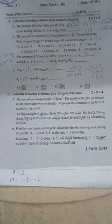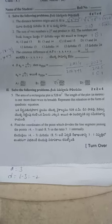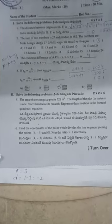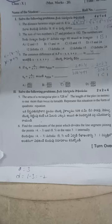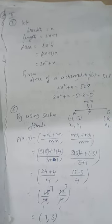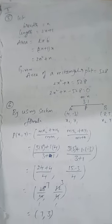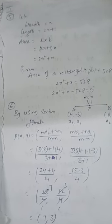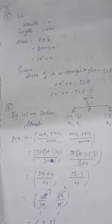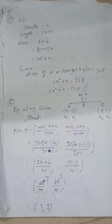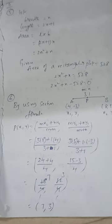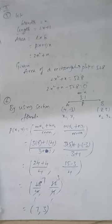The area of a rectangular plate is 528 m². The length is one more than twice its breadth. Let breadth = x, so length = 2x + 1. Area = l × b = (2x + 1) × x = 2x² + x. Given area is 528, so 2x² + x − 528 = 0.